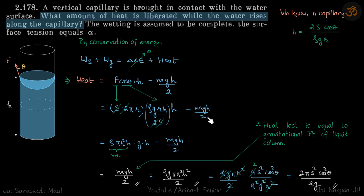So this is our answer. You can see this in magnitude is same as the work done by gravity, or you can say that is the gravitational potential energy of the liquid. So that's what we have written here: heat loss is equal to gravitational potential energy of liquid column.